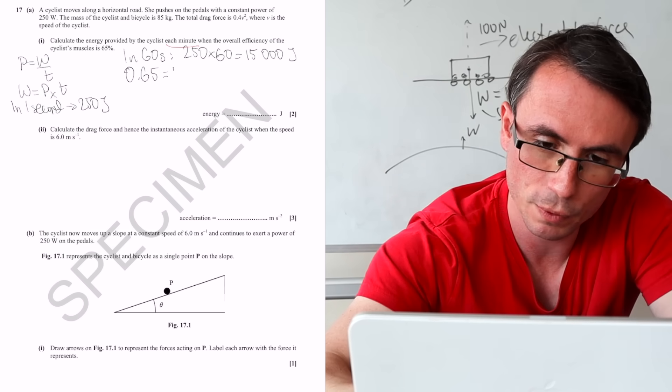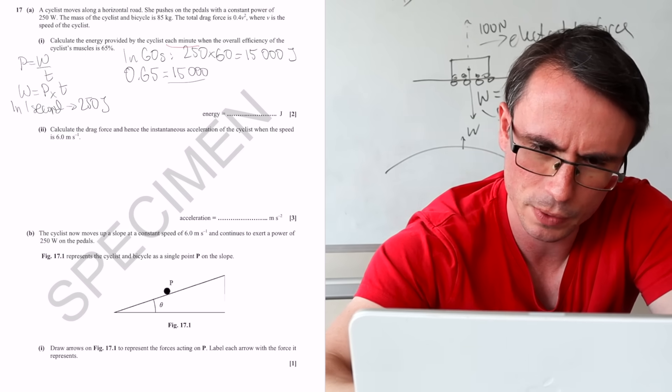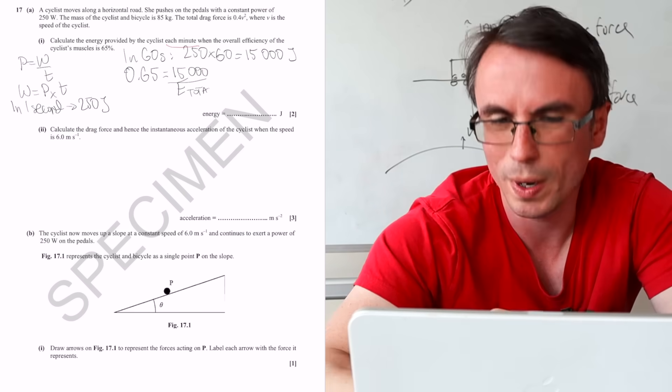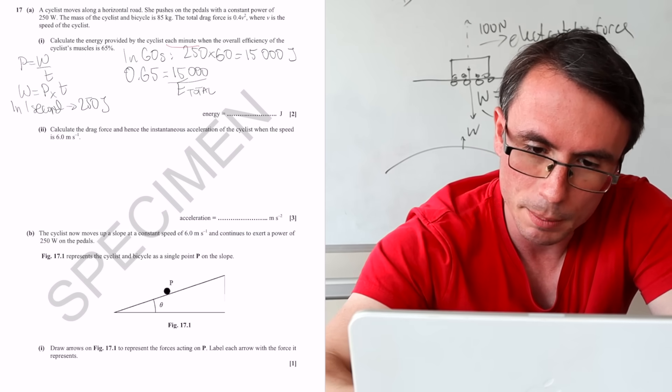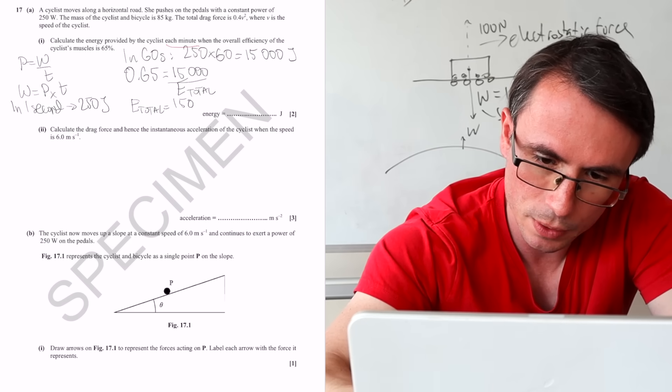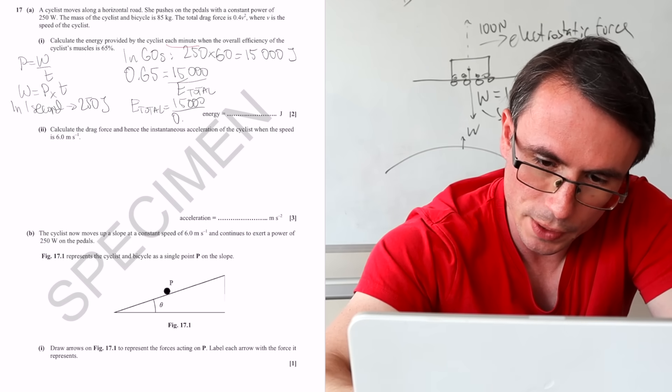But the efficiency of the muscles is only around 65%. So 0.65 will be equal to the useful over the total power. Our useful power was 15,000. Let's call it E total or total energy rather than power.